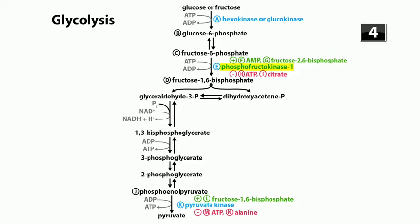Certain steps in this pathway are tightly regulated - you need to control when glycolysis is and isn't taking place. You'd want glycolysis when cells are starving for energy. AMP (step F) stimulates PFK1: when there's a lot of AMP around, that means you've already broken down ATP to ADP and then to AMP, signaling low ATP levels. Fructose-2,6-bisphosphate (step G) is another molecule that stimulates PFK1.